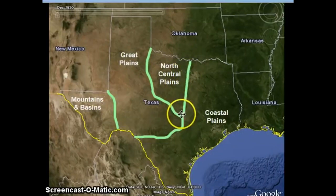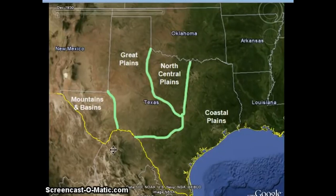The north central plains is a mixture of dry areas and areas that get a lot of rain. This area has more vegetation and is mainly consisted of small trees or mesquite brush. This area is used for farming as well as ranching.